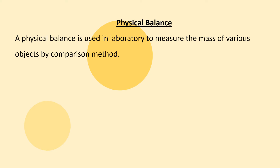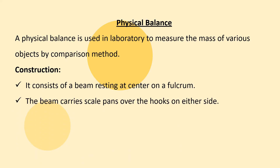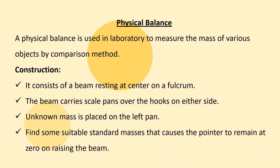Standard stones of known mass — such as 5 kg, 6 kg, and 1 kg — are used as standard masses. The mass of an object is measured by comparison using these standards. The physical balance consists of a beam resting at the center of a fulcrum; the beam carries scale pans over the hooks on either side. A known mass is placed on the left pan, and a suitable standard mass is found that causes the pointer to remain at zero.